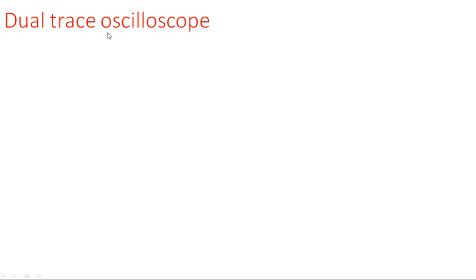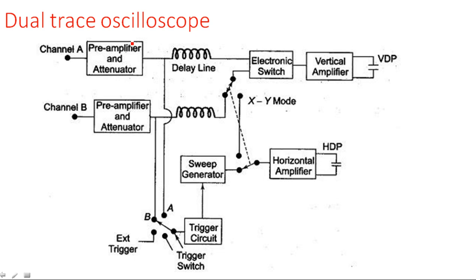In this video you will learn what is the block diagram and operation of a dual trace oscilloscope. In the previous video we have seen the dual beam oscilloscope, and the dual trace oscilloscope — both are different. If you see the block diagram and explanation you can understand what is the difference between dual beam oscilloscope and dual trace oscilloscope. This is the dual trace oscilloscope block diagram.